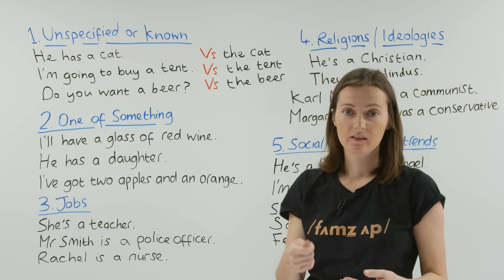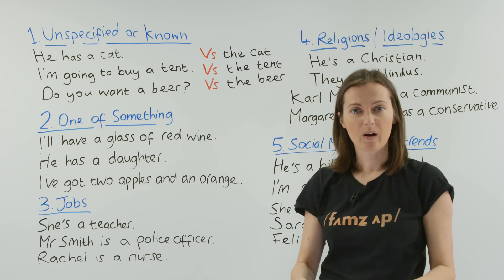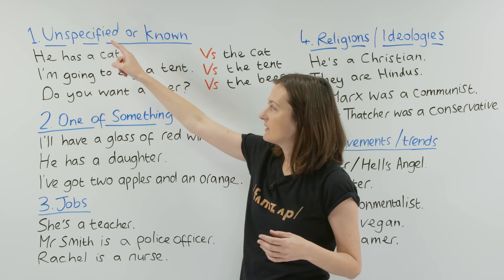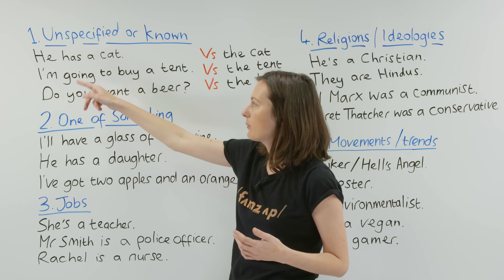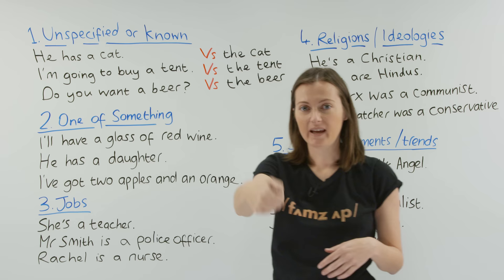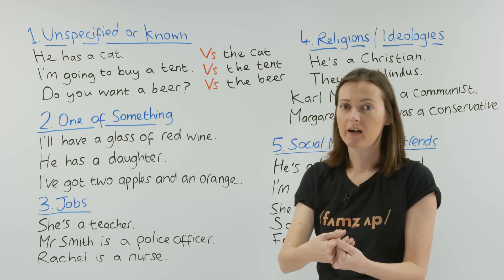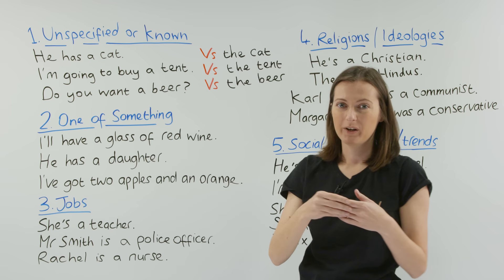Let's start with the different grammar rules for when to use 'a' or 'an'. The first rule is when something is unspecified or unknown. Here are some examples: 'He has a cat', 'I'm going to buy a tent', 'Do you want a beer?' These are all examples of something unspecified. I know he has a cat, but I don't know this cat personally, so I just say 'a cat'.